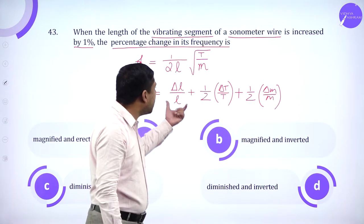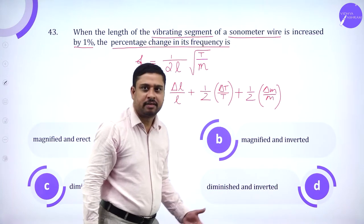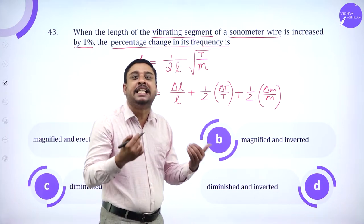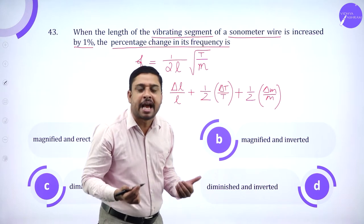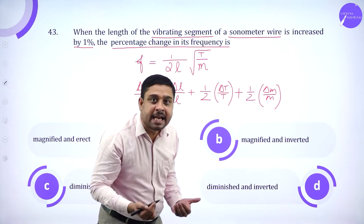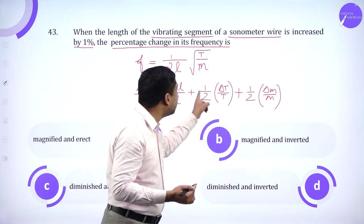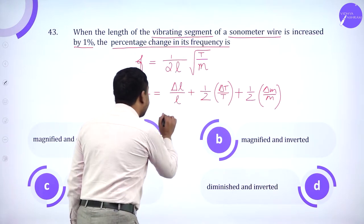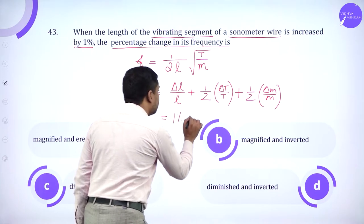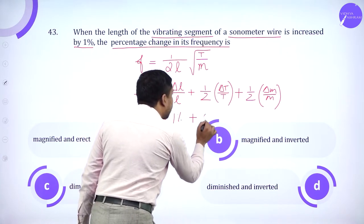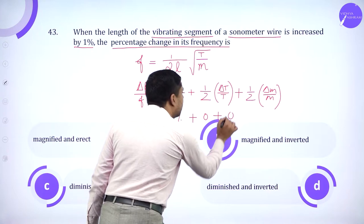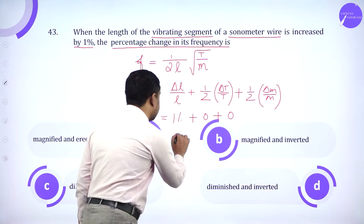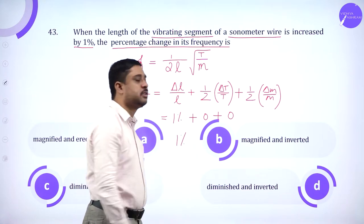For percentage change in frequency, delta f divided by f equals delta L over L plus half delta T over T plus half delta m over m. You should remember when calculating error, irrespective of the operation—addition, multiplication, or division—error is always the sum. Change in length is given as 1%, change in tension and mass per unit length are not mentioned, so the answer is 1%.